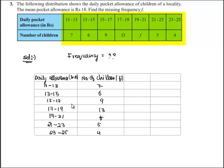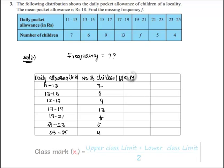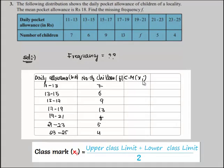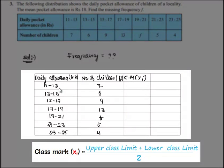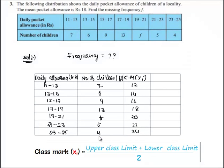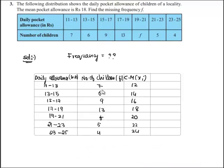We shall adopt the direct method to solve this problem as the class intervals are small. Let's take the class mark, which is xi. Class mark is half of the sum of upper limit and lower limit. That is 11 plus 13 by 2 equals 12, 13 plus 15 by 2 equals 14, and similarly we get 16, 18, 20, 22, and 24. The sum of fi is sigma fi equals f plus 44.